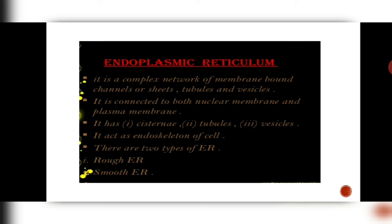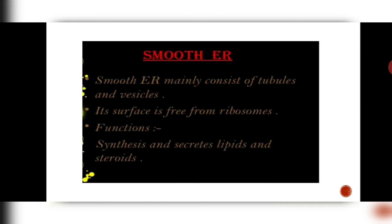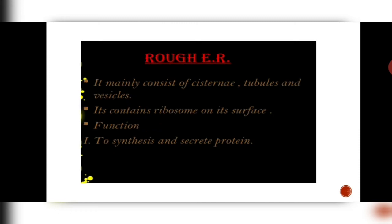Let us start with the endoplasmic reticulum. Endoplasmic reticulum is a complex network of membrane-bound channels. There can be channels, sheets, tubular structures or round vesicles. It is connected to the nuclear membrane and plasma membrane and acts as the endoskeleton of the cell. There are two types: the smooth endoplasmic reticulum (SER) and the rough endoplasmic reticulum (RER). Smooth endoplasmic reticulum is made up of tubules and vesicles, does not have ribosomes on its surface, and is responsible for synthesis and secretion of lipids and steroids. Rough endoplasmic reticulum consists of cisternae, tubules and vesicles, has ribosomes on its surface, and is responsible for secretion and synthesis of proteins in a cell.